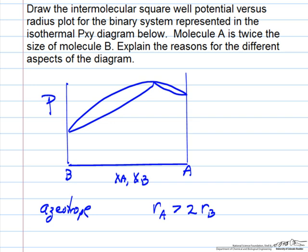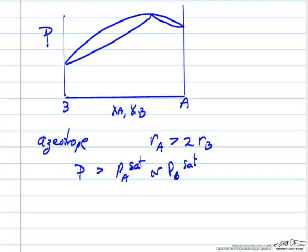And we need now something about the energy well depth for the mixture. The fact that the pressure is higher, so the pressure at the azeotrope is higher than Pa sat or Pb sat, means molecules in the liquid phase would preferentially want to be in the vapor phase. In the mixture compared to the pure materials, the interactions between A and B are weaker than between the like molecules.